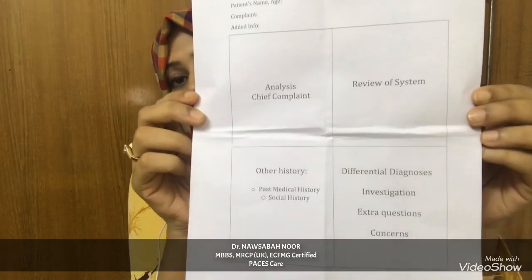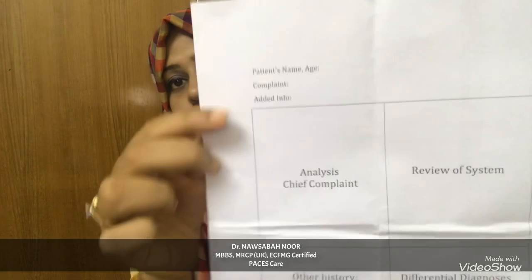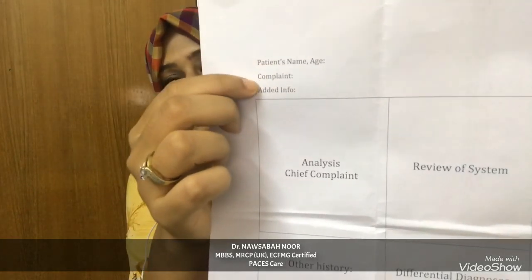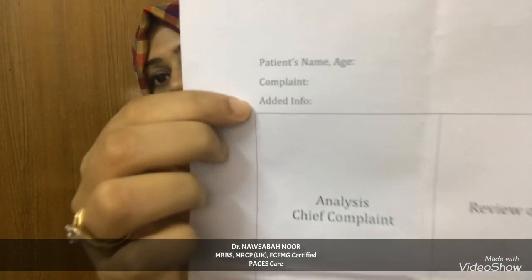History is very important for both Station 2 and Station 5. You will get 5 minutes before entering the exam hall where you can prepare yourself to take the history in a very comprehensive way. In the white paper, you have to write down the patient name and age, the chief complaint provided in the scenario, and any added information like abnormality of vitals, long-standing hypertension, or diabetes.